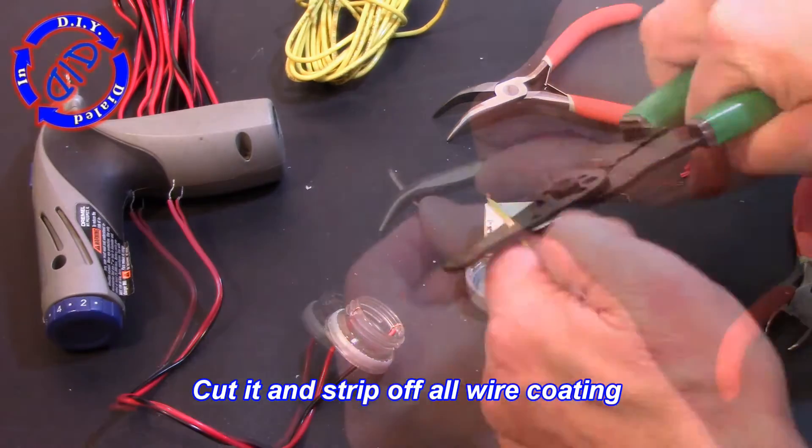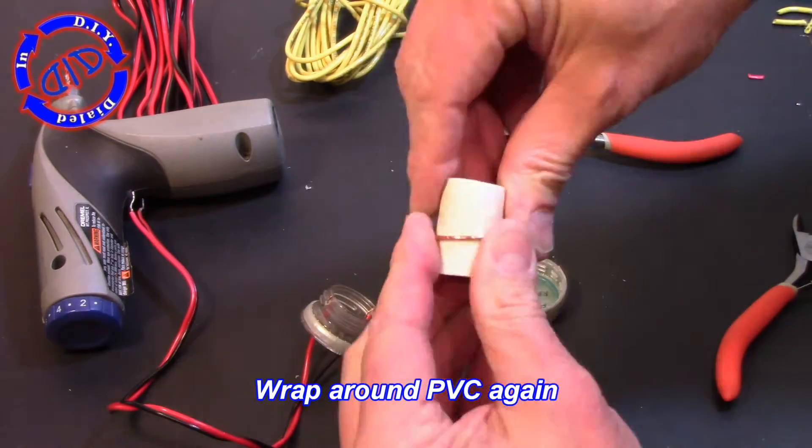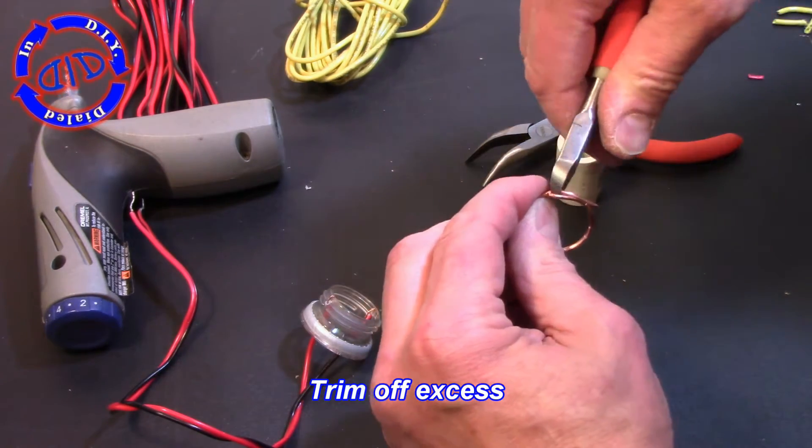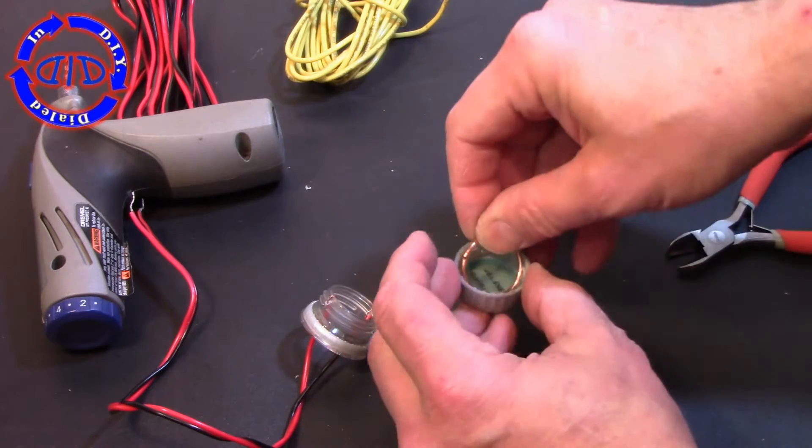Once you've cut your length of wire go ahead and strip off all the outer coating. You want that completely clean and free and then wrap it around the PVC again to give it a good round shape. You don't have to use the PVC for this process, it just helps to make it go a little bit quicker.